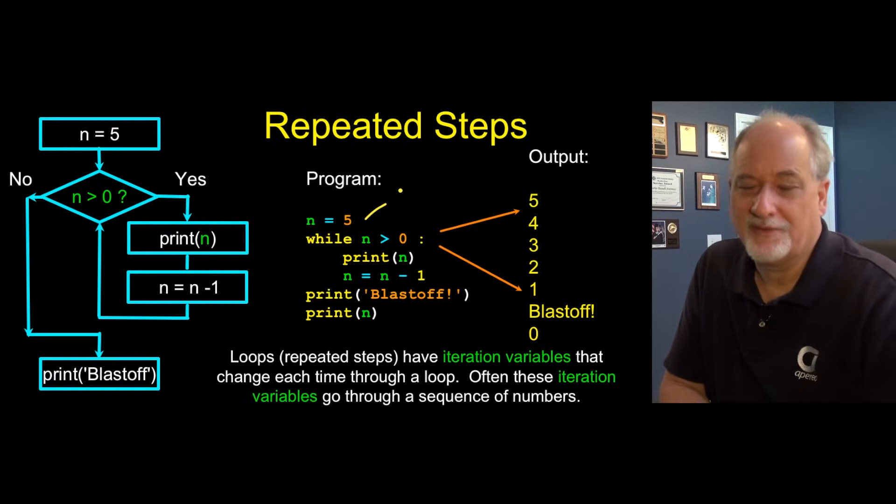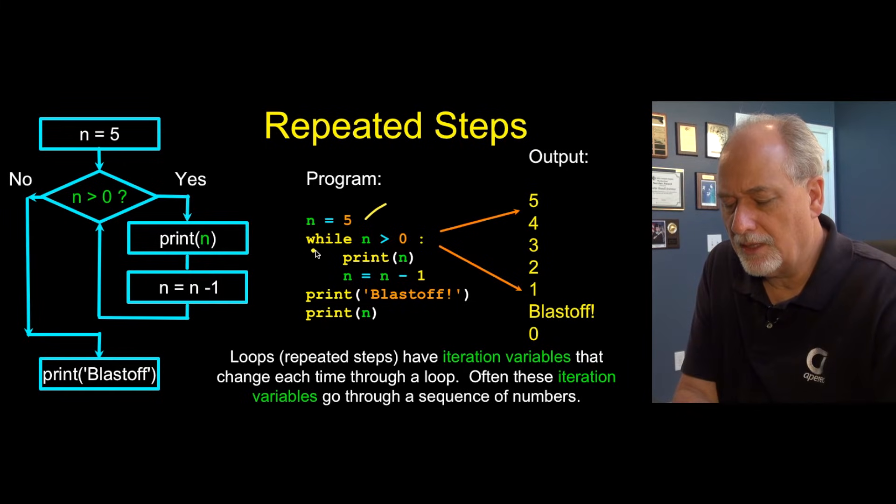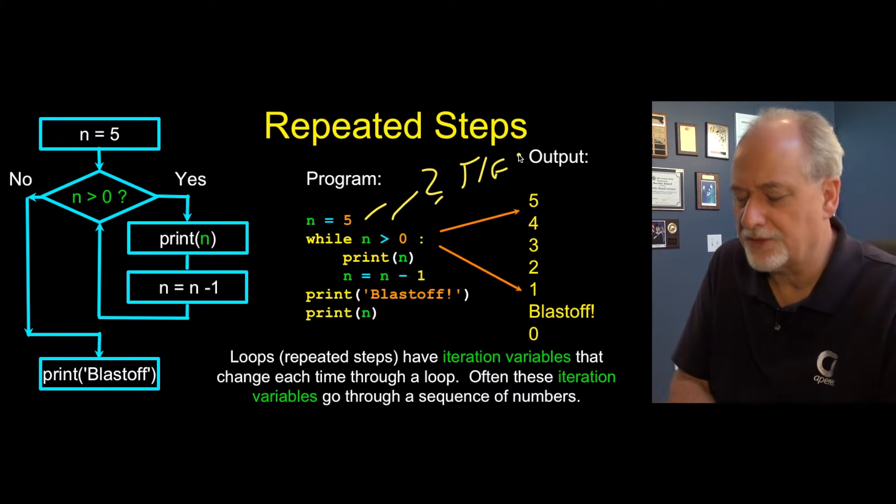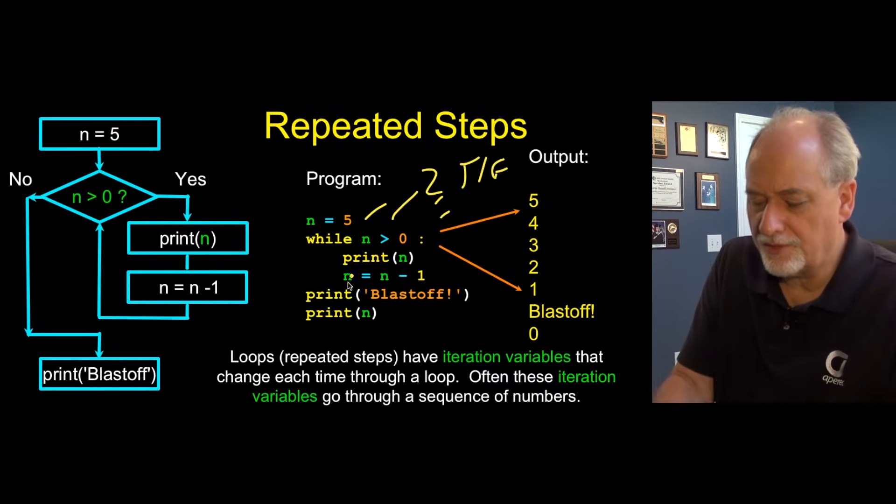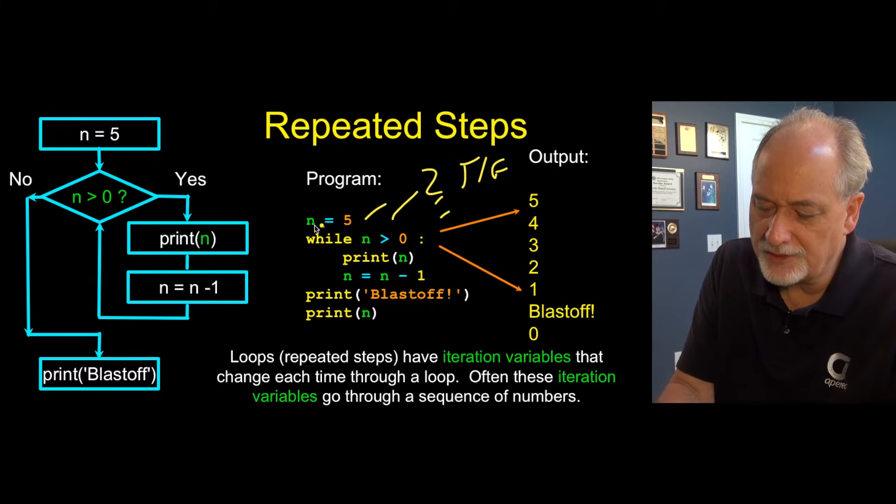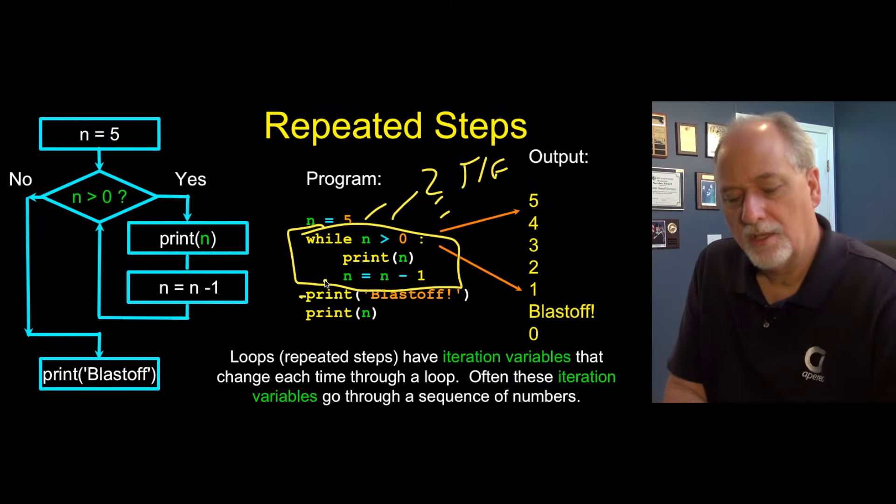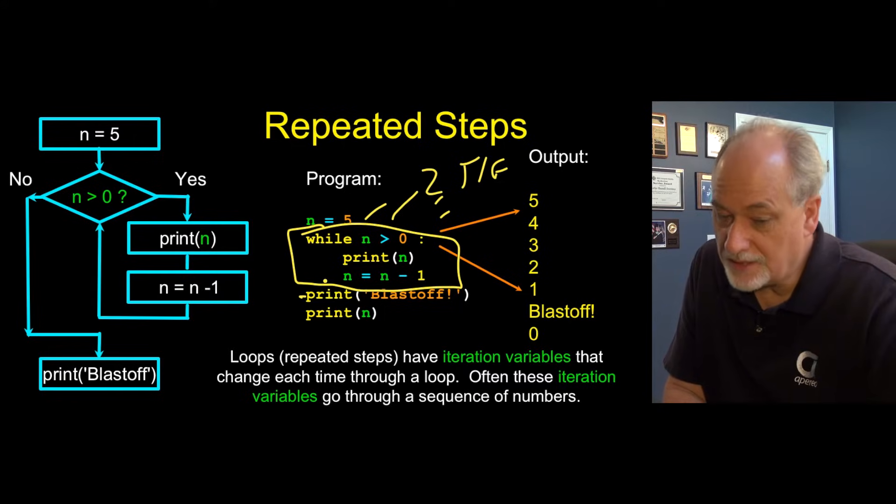And the while loop functions very much like an if statement. The while starts it and then this is just like an if statement. It's a question that leads to a true or a false answer. And then there's a colon and then there's an indented block. And then we use the de-indent to determine how long the loop is. And so this print is de-indented, so that indicates the end of the loop.